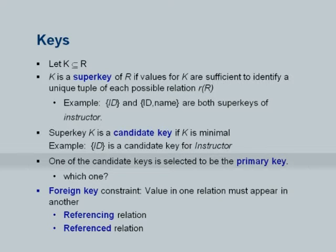All of you have no doubt heard of the UID project, now renamed as Aadhar, which is being run by Nandan Nilekani. That is going to give a unique id to every person in India. Tomorrow you could use that universal id across all applications in India. For it to be universal, it would have to cover not just Indian citizens but also everyone connected with something going on in India.